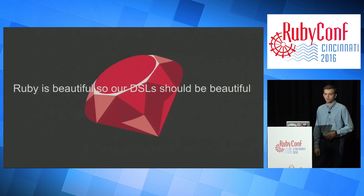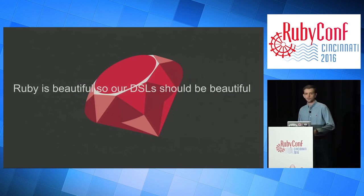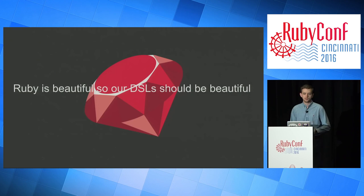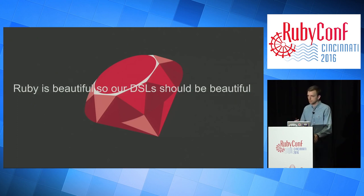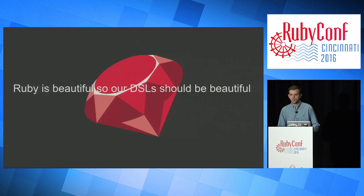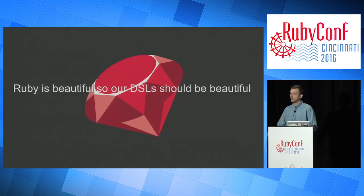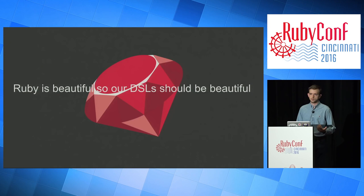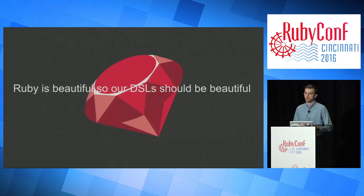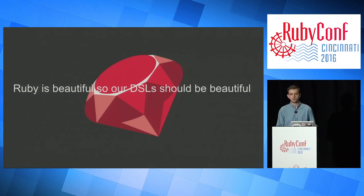I want to start off by saying Ruby is beautiful, so our DSLs should be beautiful. Ruby is known for being a very human-readable language. I think our DSLs should live up to this reputation — readable yet extremely powerful. This talk is going to go over some of the common ways developers use the dynamic nature of Ruby to achieve these DSLs. I went through many popular libraries, categorized each time they use metaprogramming or lambda functions, and then categorized them further into use cases or best practices.